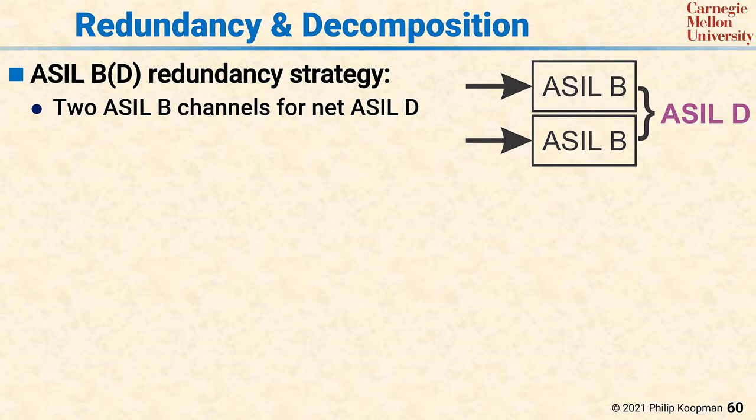Given that life-critical systems need to have redundancy so that they can fail operational at least to some degree, the question is how do you achieve that redundancy at an affordable cost? A common approach for fully automated vehicles is to attempt an ASIL B of D redundancy strategy, pictured here in a very abstract way. The idea is that two ASIL B computing units receive independent inputs and perform some functions, but together they are so unlikely to fail together that ASIL D credit can be taken.